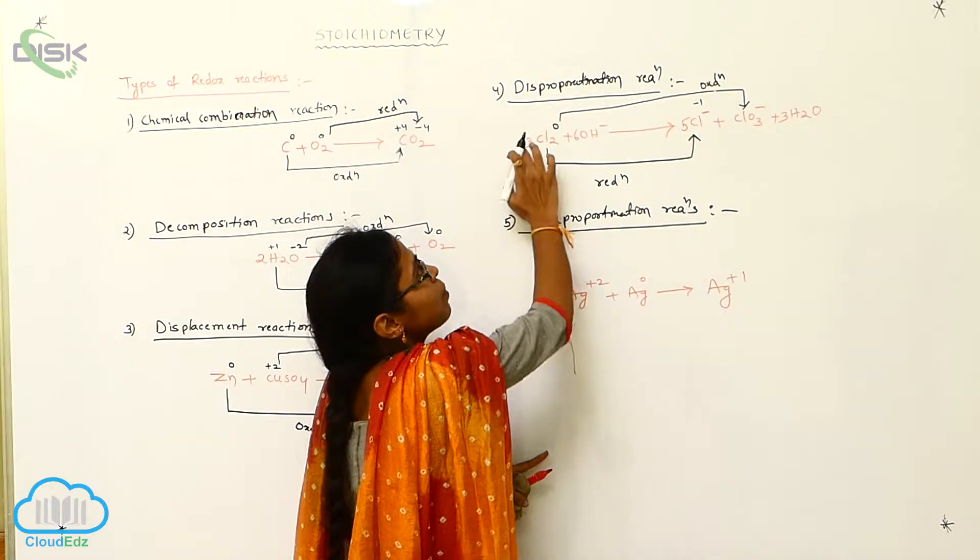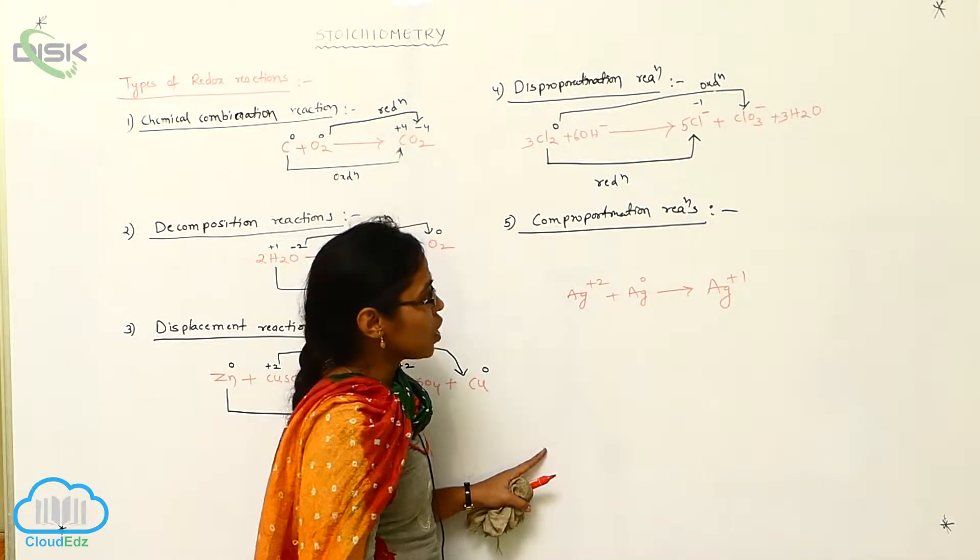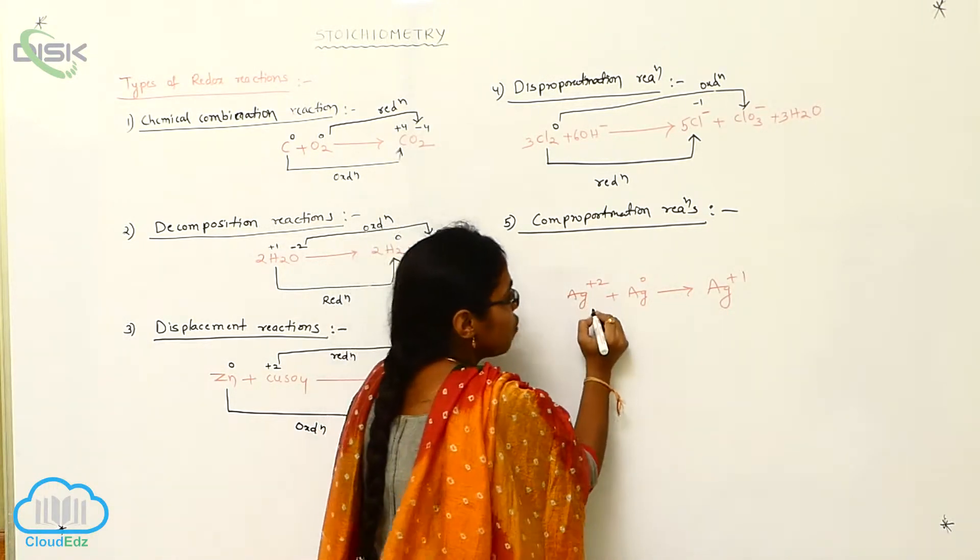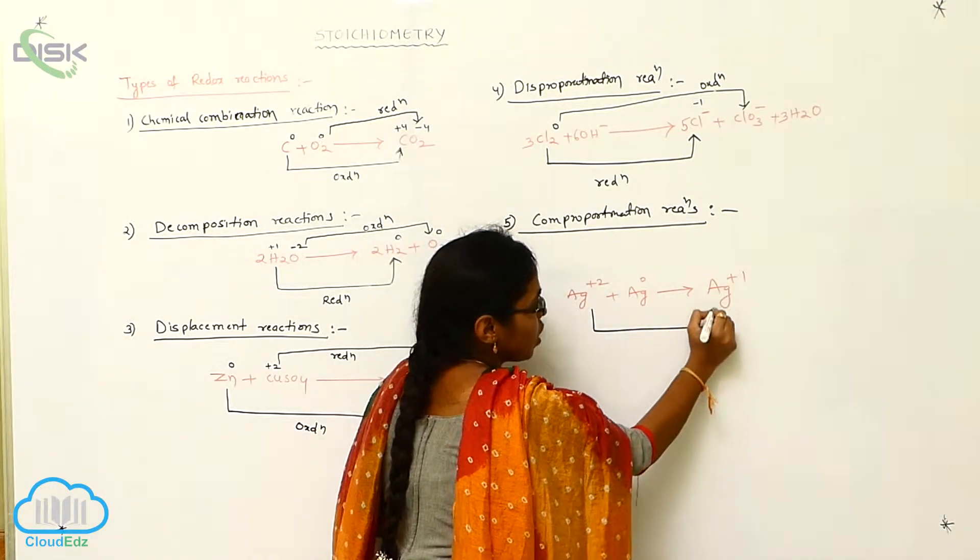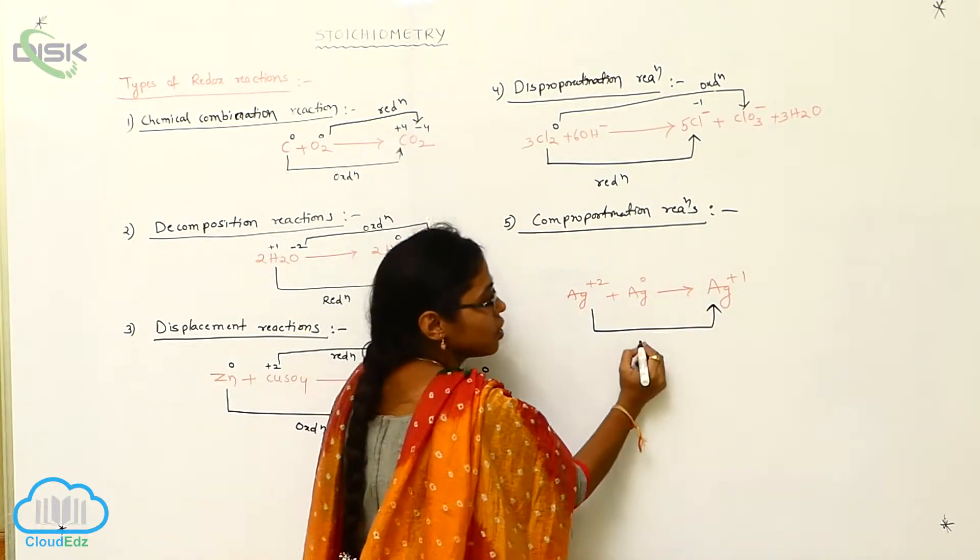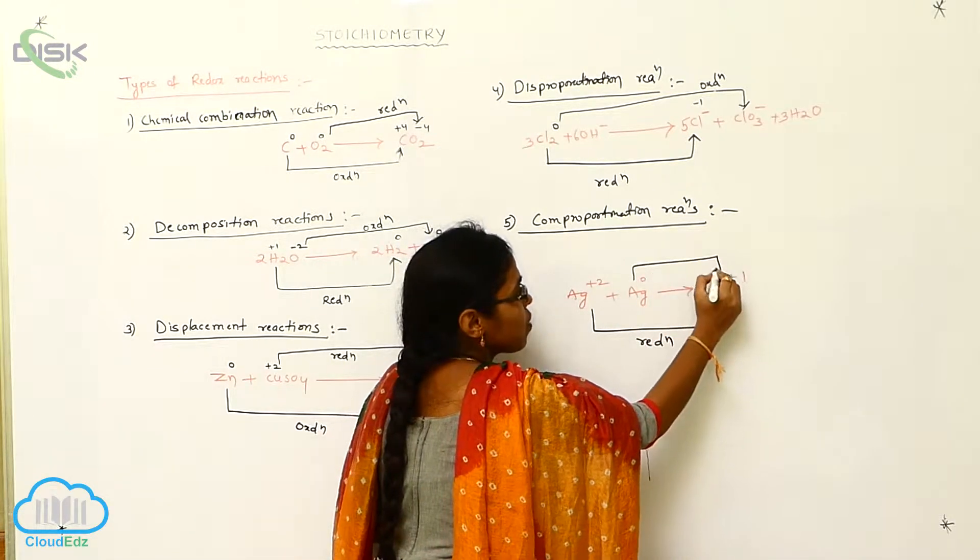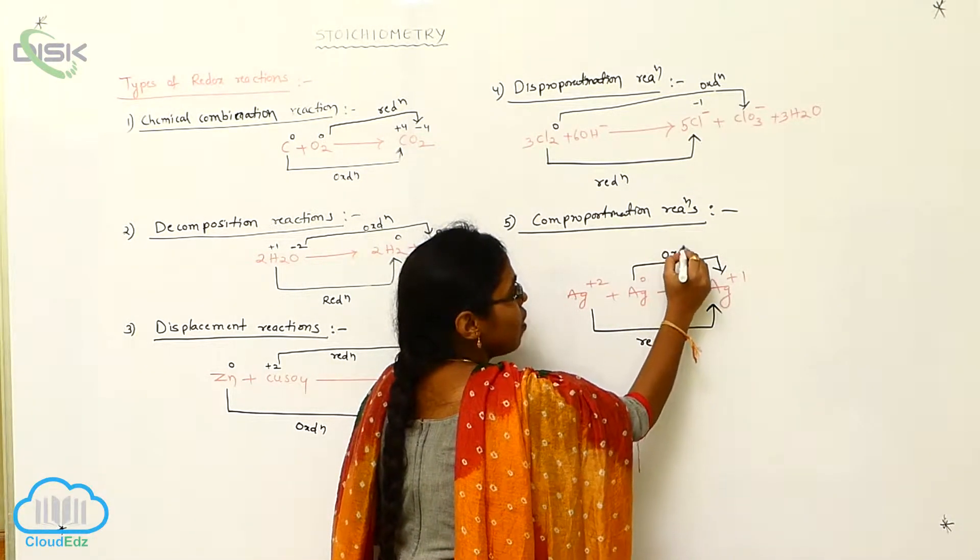Comproportionation reaction is the opposite of disproportionation reaction. In this example, Ag possesses a +2 charge which changes from +2 to +1. That's a decrease in oxidation number, called reduction. Next, 0 to +1, that's called oxidation.